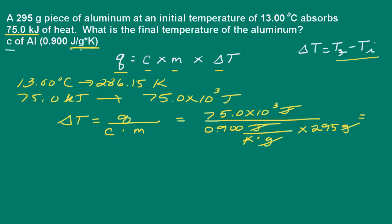So delta T is equal to 282.4859 Kelvin. So again, remember delta T is the final temperature minus the initial temperature.